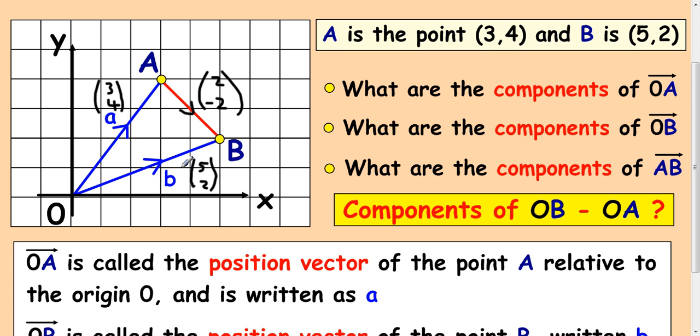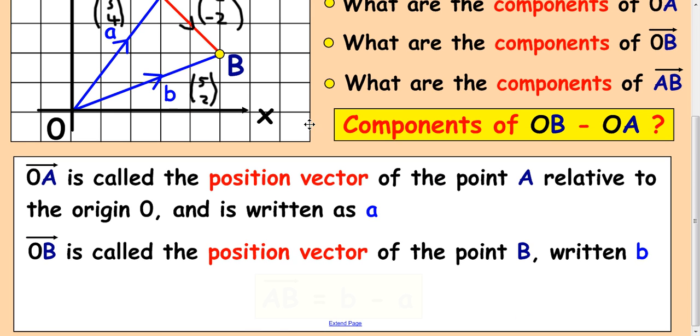Position vectors, that's what they're called, and this works for any case. If you're looking for the components of vector AB, you do B minus A, where these two are the position vectors which are just the same as the coordinates.